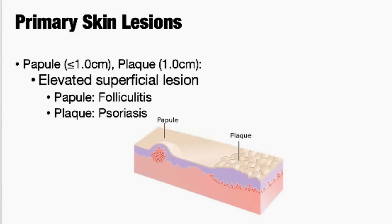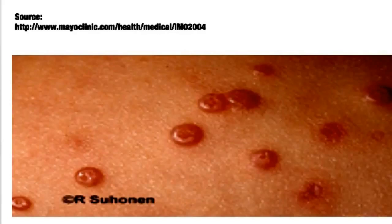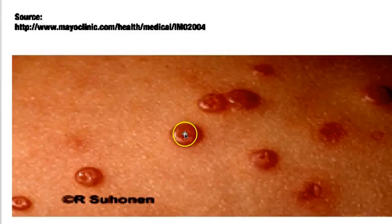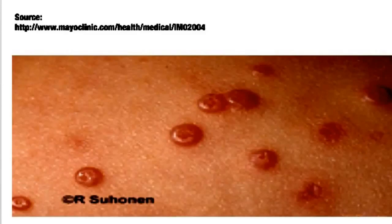Here is molluscum contagiosum — a really common skin lesion. You can see it's very characteristic because it has this annular, donut-like appearance with this umbilicated middle, like the hole taken out of the center. These are painless papules. If they're scratched or injured, the child can spread this. It can actually also be a sexually transmitted disease in adulthood. They tend to be firm, dome-shaped, umbilicated papules — that's the classic appearance.